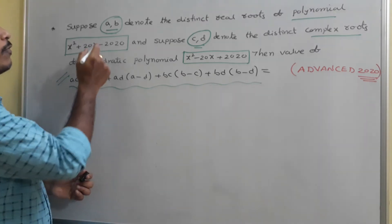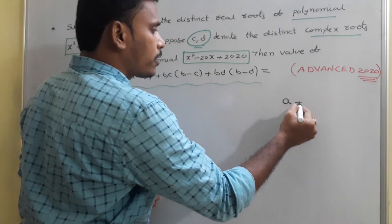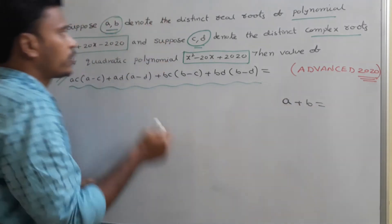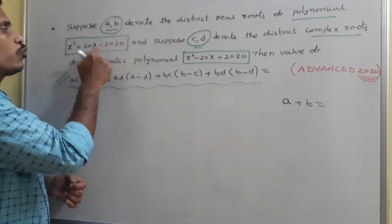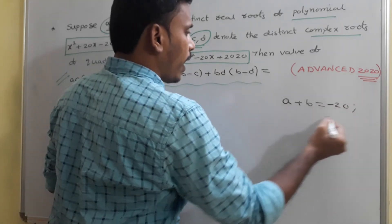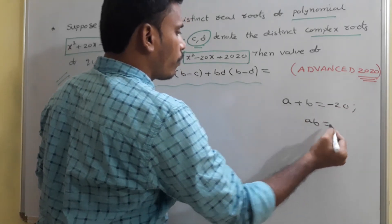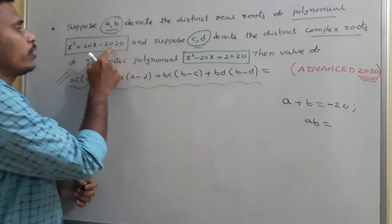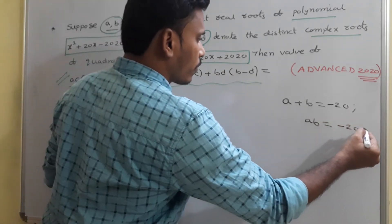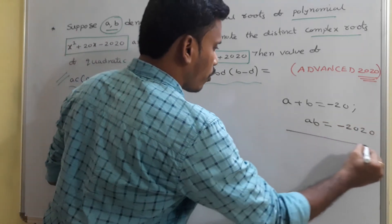First of all, from the first polynomial, sum of the roots a + b = −b/a. Since a and b are the roots, the summation is −20. As well, a × b, the product of the roots, which is −2020. So this is related to the first polynomial.